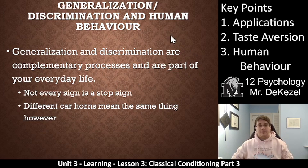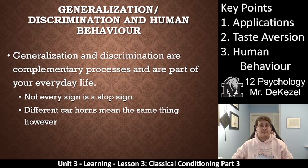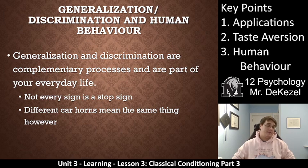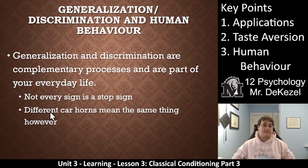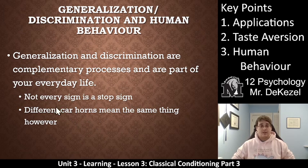Key point 3: generalization and discrimination in human behavior. Generalization and discrimination are complementary processes and are part of your everyday life. We know that not every stop sign is a stop sign we need to learn individually, but we know that different car horns mean the same thing. So we can discriminate between signs, but we've generalized that car horns mean 'move — you're ignoring the red or green light because you're on your phone.' We have generalized and discriminated a whole bunch of things we don't even realize, and it helps us navigate our everyday lives.